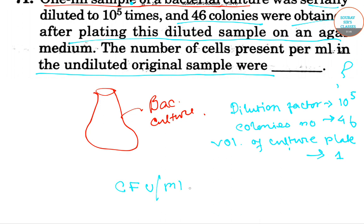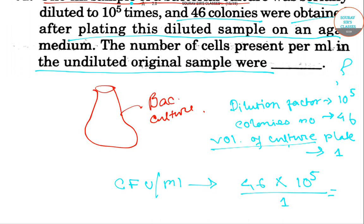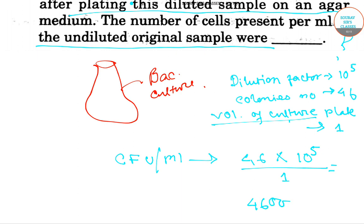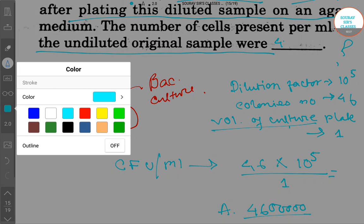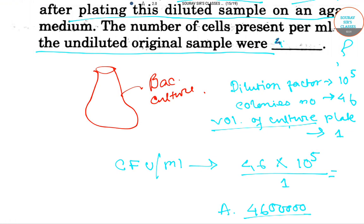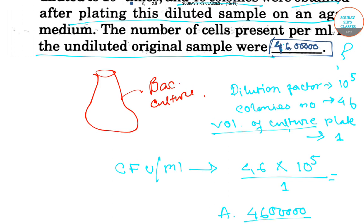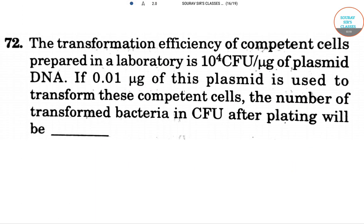We can calculate CFU per mL as: number of colonies (46) multiplied by the dilution factor (10 to the power 5), divided by the volume of culture (1). Calculating this gives us 4,600,000 — that is the answer.